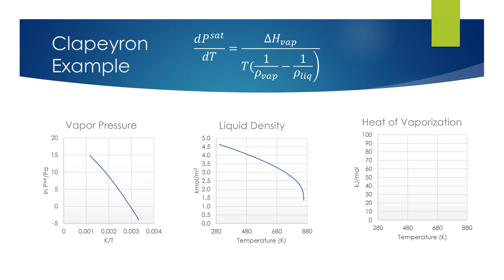For example, the Clapeyron equation may be used to evaluate the consistency between a compound's vapor pressure, heat of vaporization, and liquid density.